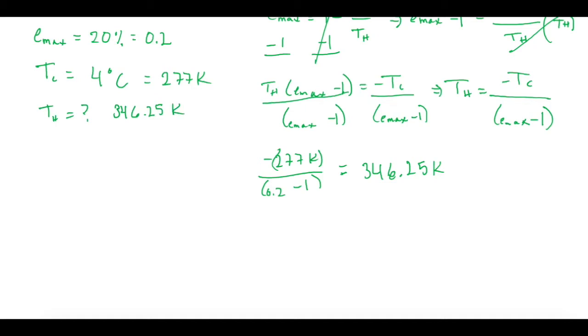Now we're going to use the same equation right here, only now we're going to increase our Emax to 0.5 and solve for what our new Th will be. So we'll have our new Th is equal to the negative Tc, which hasn't changed, so 277 Kelvin, divided by our new Emax of 50%, so 0.5 minus 1. And that gives us 554 Kelvin.